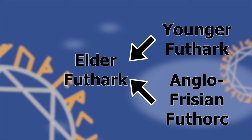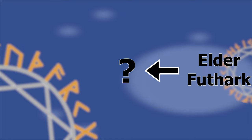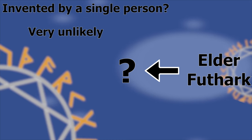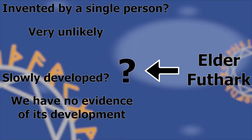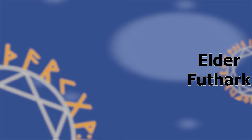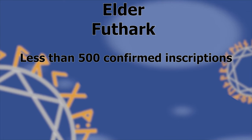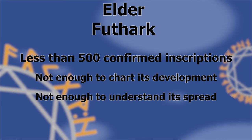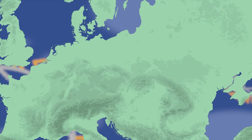We know that other runic alphabets developed from the Elder Futhark, but we don't know where the Elder Futhark itself developed from. We don't know if it was invented by a single person at a single time — which would be very unlikely — or if it slowly developed. And while that is more likely, we don't have evidence of its development at all. Of our 6,000 runic inscriptions, fewer than 500 are Elder Futhark inscriptions. This is not enough to chart its development, form an understanding of its spread, where it originated, or where it went. On our scant evidence, three possibilities are floated.